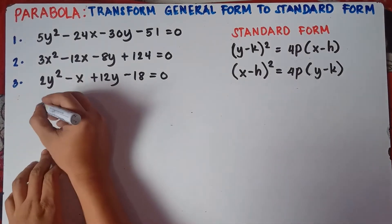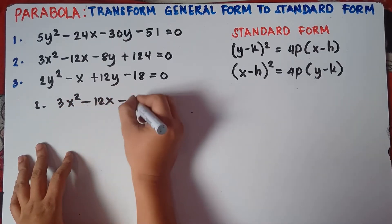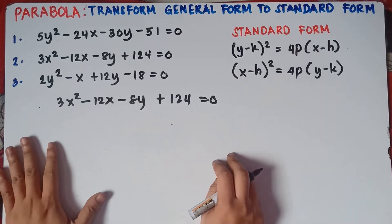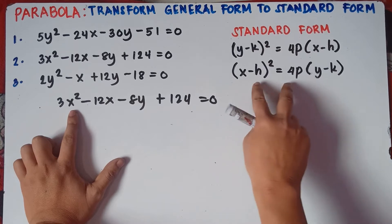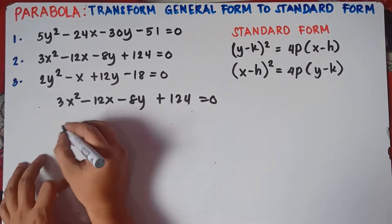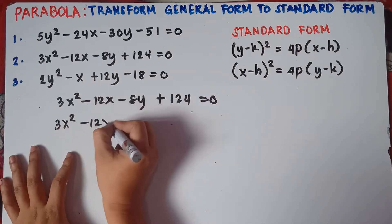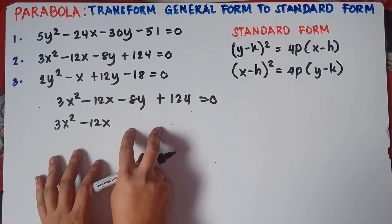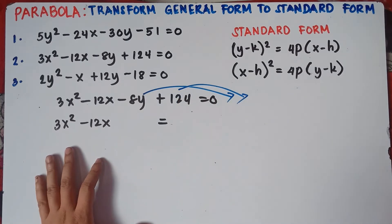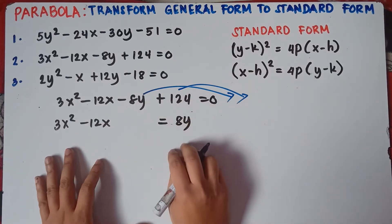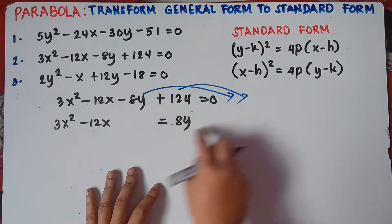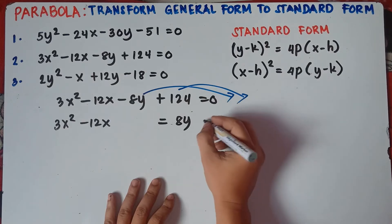Number 2. Let me copy the equation: 3x² - 12x - 8y + 124 = 0. If you have x squared, this will be our standard form equation — our answer will look like this. First, we need to separate the x variables and the y variables. Copy 3x², copy -12x, and put a space because we need to complete the square. Then transpose -8y and +124 to the right side. Remember, once you transfer a term across the equal sign, you always change the sign. So -8y becomes +8y, and +124 becomes -124.